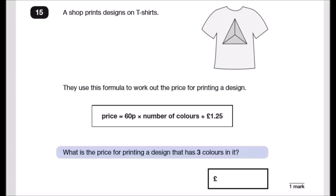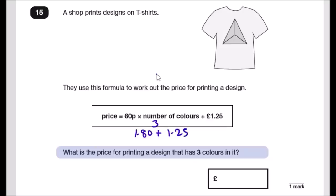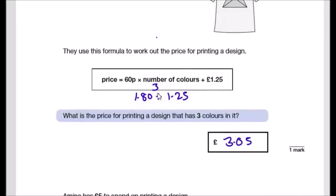Question 15: a t-shirt printing formula is: price = 60p × number of colors + £1.25. For three colors: 60p × 3 = 180p = £1.80. Then £1.80 + £1.25 = £3.05. When adding decimals, line them up as if they're hundreds: 180 + 125 = 305.